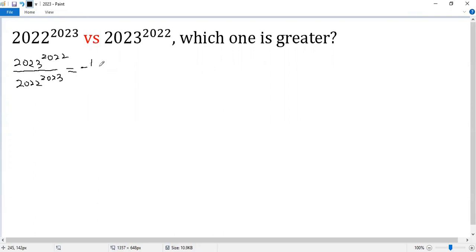We can write this as (1/2022) times (2023^2022). Using exponent rules,